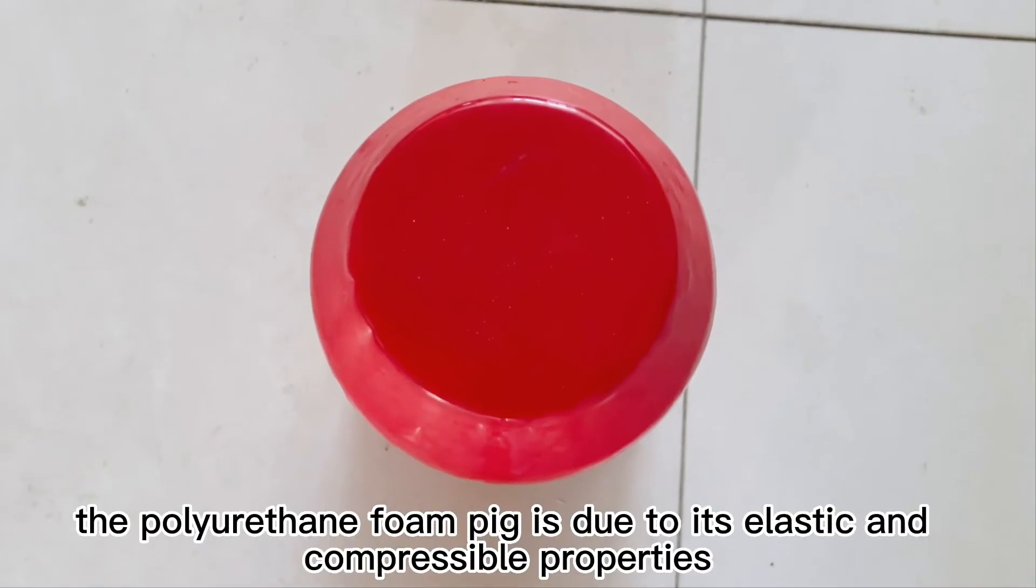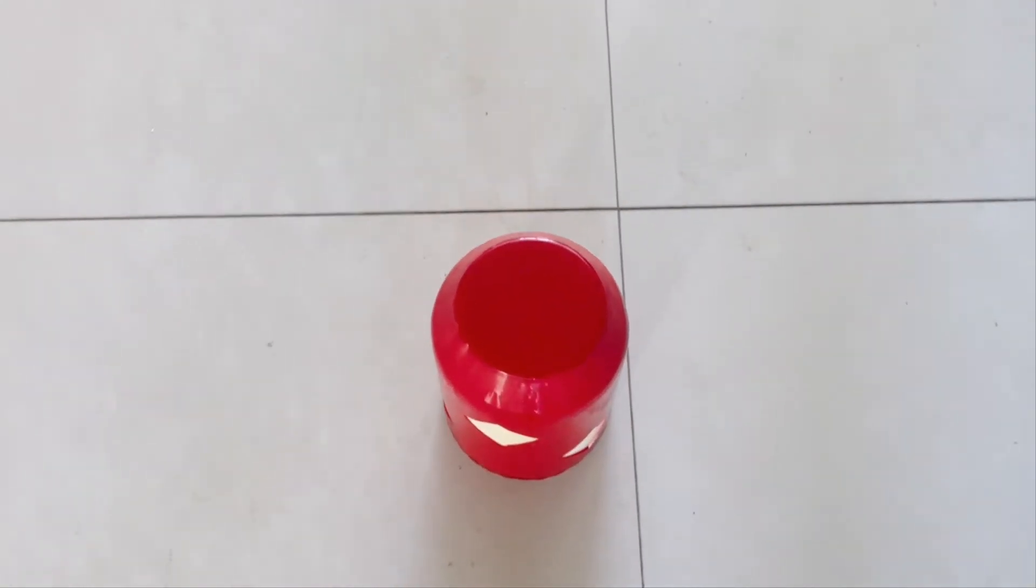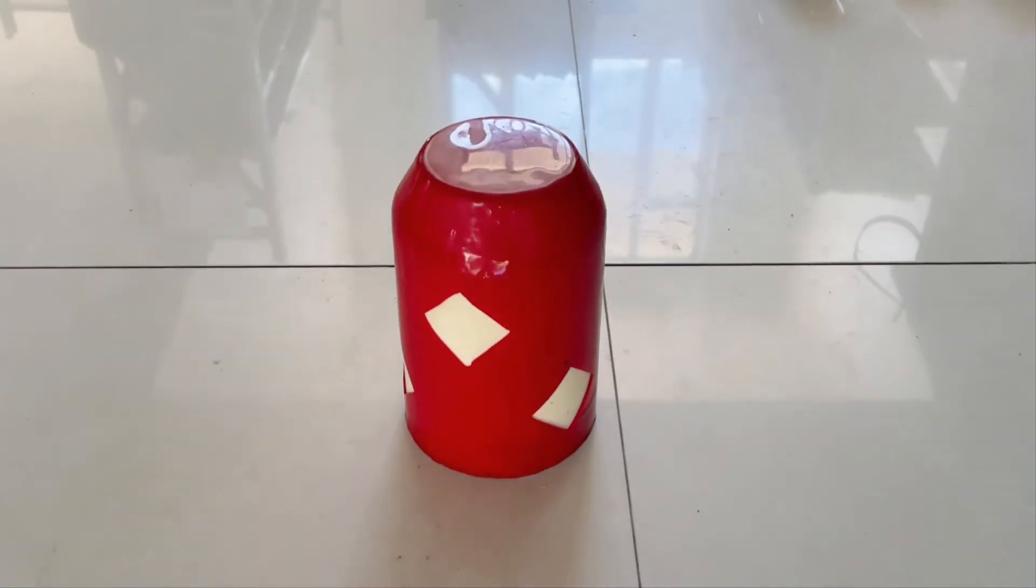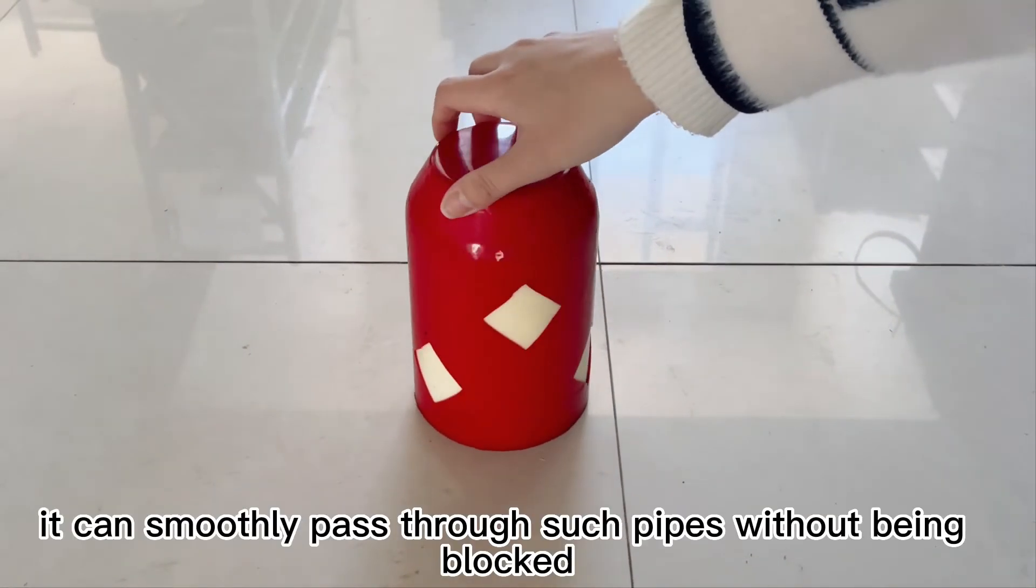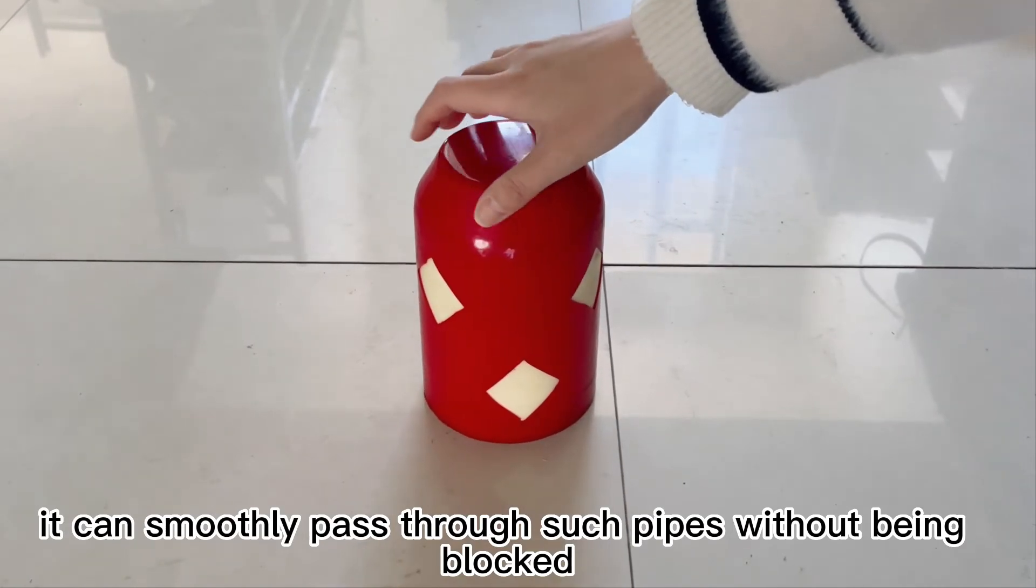However, the polyurethane foam pig, due to its elastic and compressible properties, can smoothly pass through such pipes without being blocked.